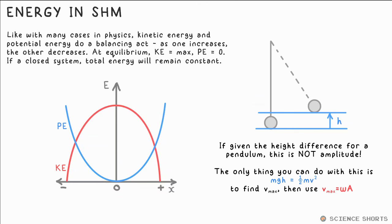If there is no damping or resonance, and it's a closed system, no energy should be lost to the surroundings, which means that total energy stays the same as kinetic energy and potential energy do their balancing act.